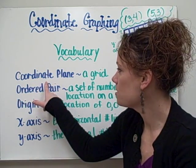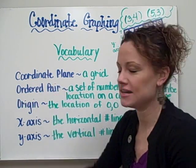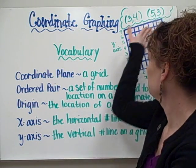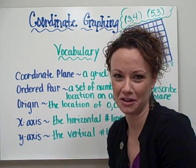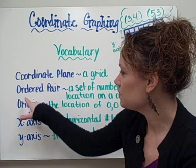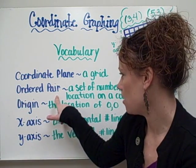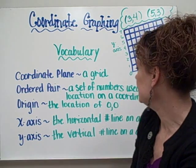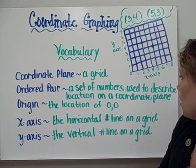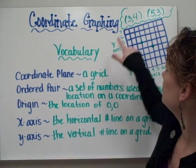Our first word is coordinate plane, and that's just a fancy word for your grid system that you've been exposed to in earlier grades as well. Our next word is the word ordered pair. What ordered pair is, it's a set of numbers used to describe the location on a coordinate plane.